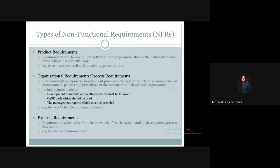The constraints basically come from the organizational policies and procedures in the customer's and developer's organization. The system development varies from organization to organization. Organizational requirements include requirements on the development standards and methods which must be followed, the case software engineering tools which should be used, and the management reports which must be provided.